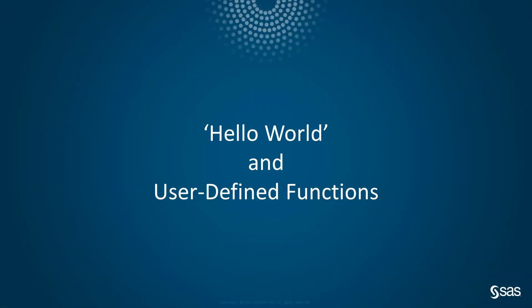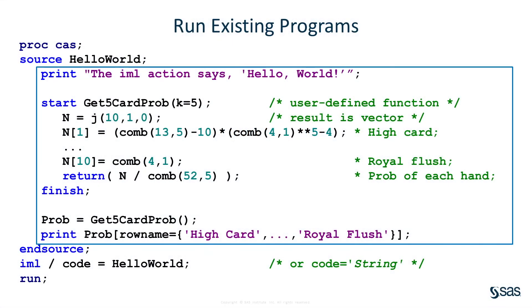Let's see how to run a basic IML program by using the IML action. The program runs in PROC CAS in SAS. You can put the IML program inside a source/end-source block. The program is inside the blue rectangle on this slide. The first statement in the block prints 'hello, world.' The program then defines and calls an IML function called get5cardprob.